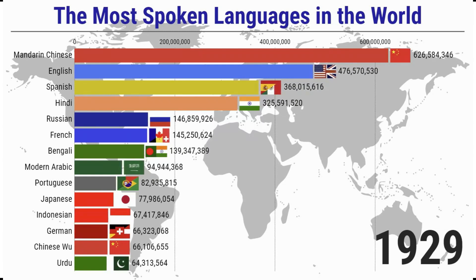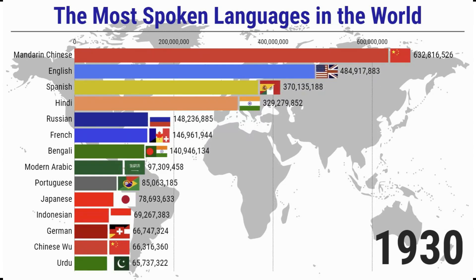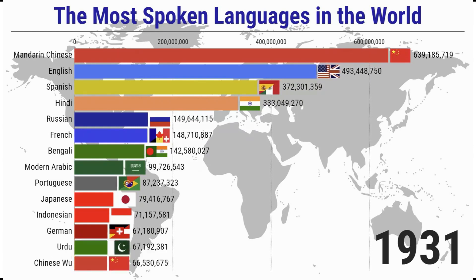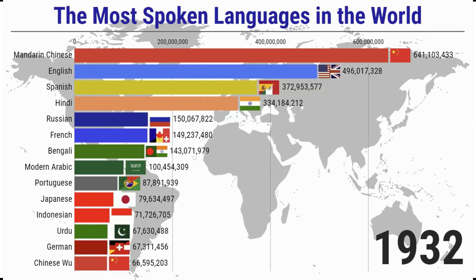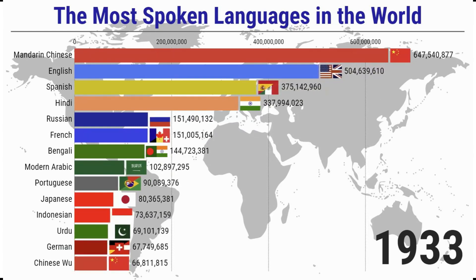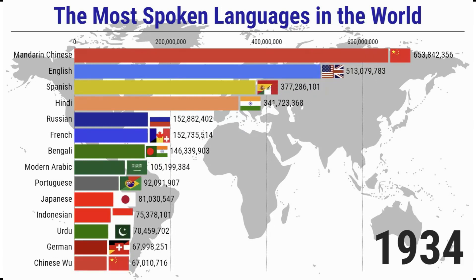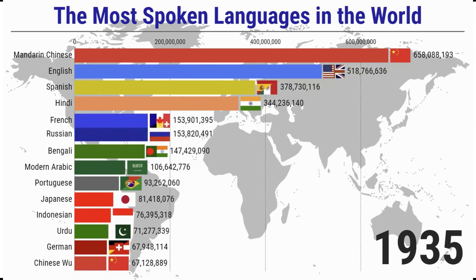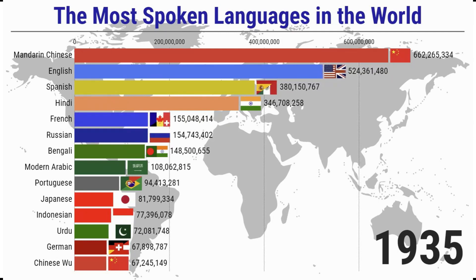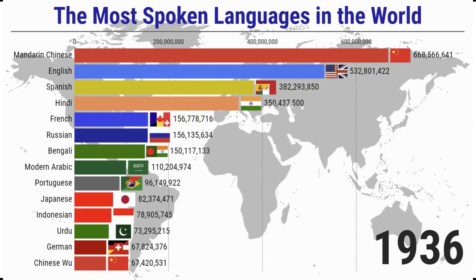The population with Spanish as the official language is close to 500 million, ranking fourth. The population using French as the official language is approximately 350 million, ranking fifth.